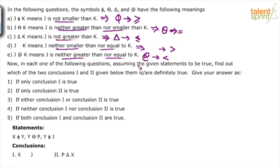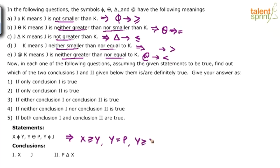Now you know the options: only conclusion 1 is true, conclusion 2 is true, and so on. Look at the statements and replace the symbols with the proper inequality. So what do we get? X is greater than or equal to Y. We know that Y is equal to P and Y is greater than or equal to J. Similarly, replace the conclusions: the first conclusion says X greater than J, the second one says P less than or equal to X.